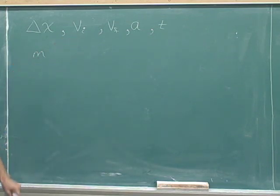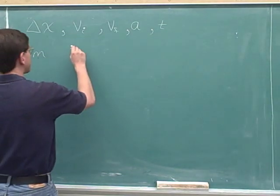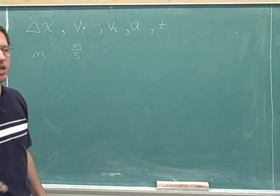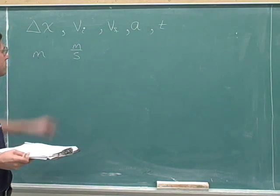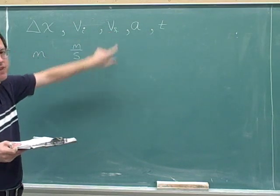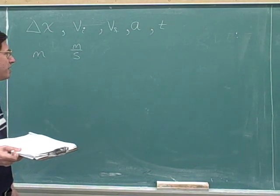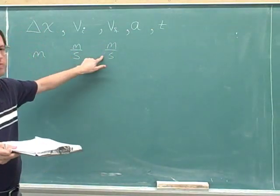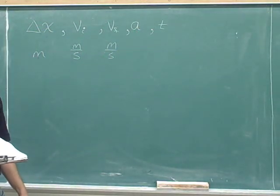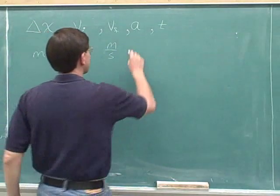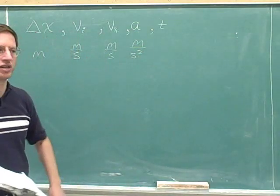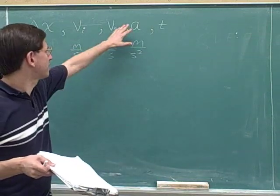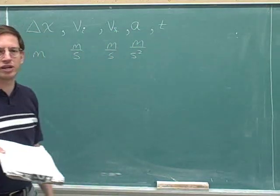The standard units for velocity are meters per second. In real life we might talk about velocity in miles per hour, but in physics the standard units are meters per second. Final velocity is also another velocity, so it's also meters per second. The units for acceleration are the most complicated here — they turn out to be meters per second squared. We're just going to memorize that the units for acceleration are meters per second squared.